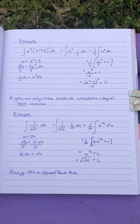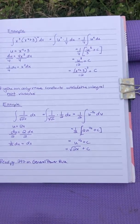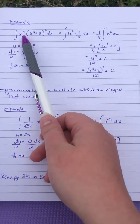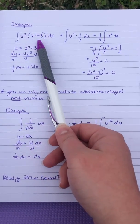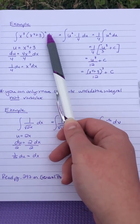Alright, let's look at another example. Okay, so we've got the integral of x cubed times x to the fourth plus three quantity squared dx.